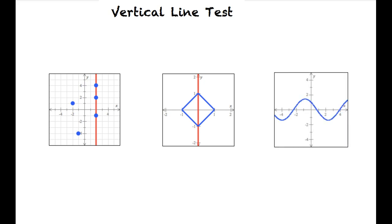This third graph is a function. It passes the vertical line test because it is impossible to draw a vertical line that intersects the graph more than once.